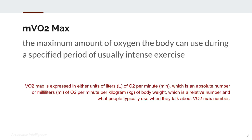Modeled VO2max is the maximum amount of oxygen the body can use during a specified period of usually intense exercise. VO2max is typically expressed either in units of liters of O2 per minute, which is the absolute number, or in milliliters of O2 per minute per kilogram of body weight, which is the relative number. Typically people look at the relative number when they talk about VO2max.